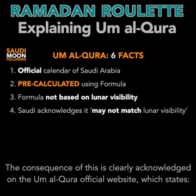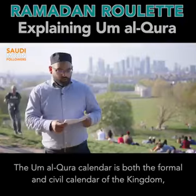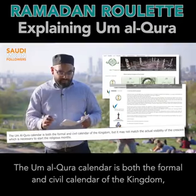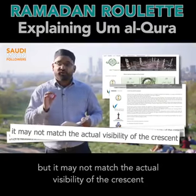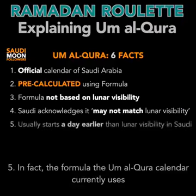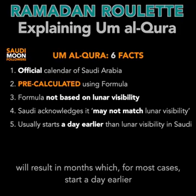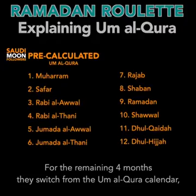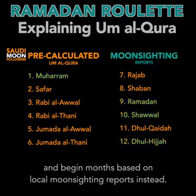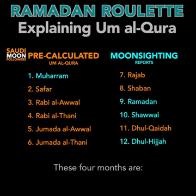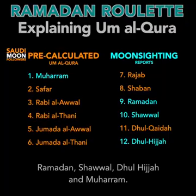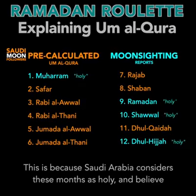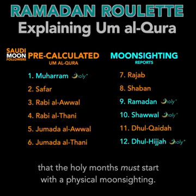Fourth, the consequences of this are clearly acknowledged on the Ummul Qura official website, which states: the Ummul Qura calendar is both the formal and civil calendar of the kingdom, but it may not match the actual visibility of the crescent. Fifth, in fact, the formula the Ummul Qura calendar currently uses will result in months which for most cases start a day earlier than the moon is actually visible in Saudi Arabia. Sixth, in practice, the Ummul Qura calendar is only used in Saudi Arabia for eight months of the year. For the remaining four months — Ramadan, Shawwal, Dhul Hijjah and Muharram — they switch from the Ummul Qura calendar and begin months based on local moon sighting reports, because Saudi Arabia considers these months as holy and believes the holy months must start with a physical moon sighting.